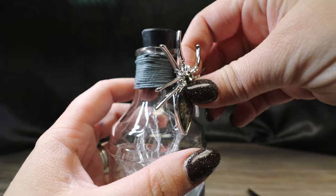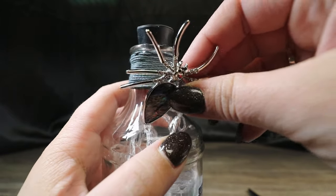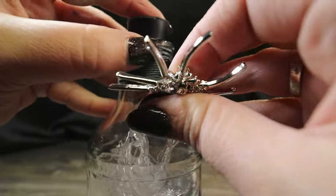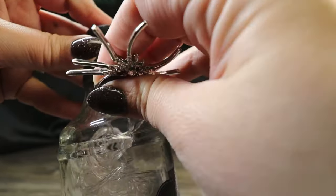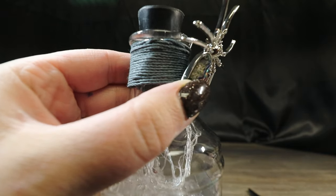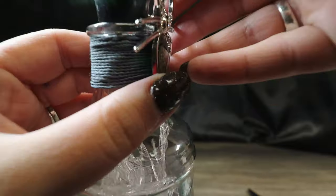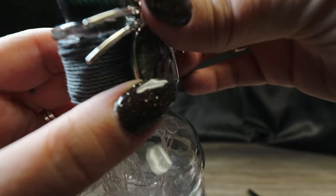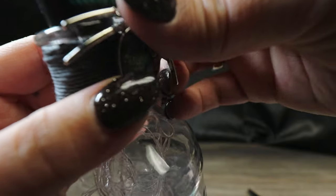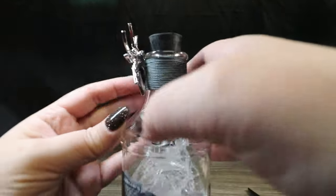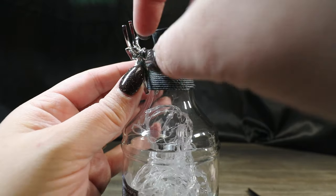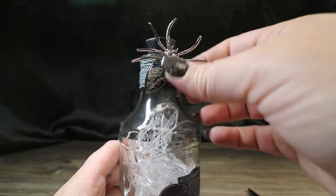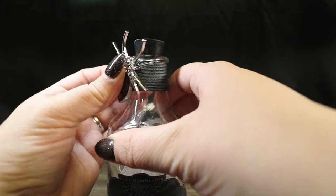But all we're gonna do is take the pin and we're gonna go under some of the cording here and then we're going to pop it out. And once it pops out, then we can clasp it closed here. Okay, and then once it's closed we can kind of pull it down and get it where we want it on our bottle.